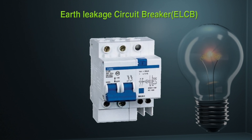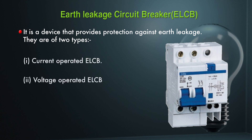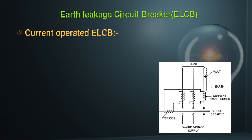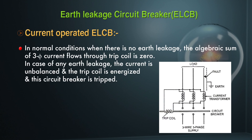An Earth Leakage Circuit Breaker (ELCB) provides protection against earth leakage and is of two types: current operated and voltage operated. The current operated ELCB is used when the product of operating current and earth loop impedance does not exceed 40 ohms. In normal conditions with no earth leakage, the algebraic sum of three phase currents through the trip coil is zero. In case of earth leakage, the current becomes unbalanced, the trip coil is energized, and the circuit breaker is tripped.